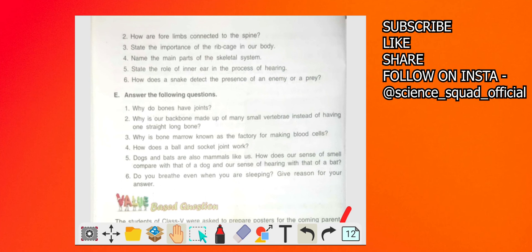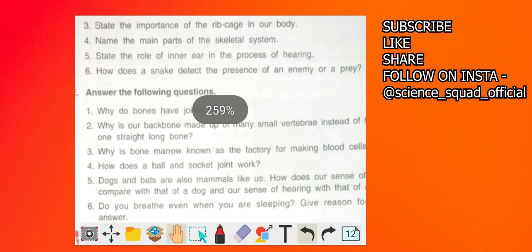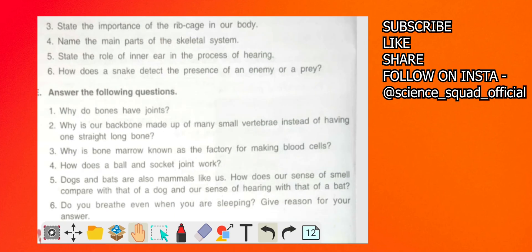State the importance of rib cage in our body. Rib cage protects our inner delicate organs like heart and lungs. Name the main parts of the skeletal system - skeletal system ke four main parts: skull, your rib cage, backbone, your limbs.